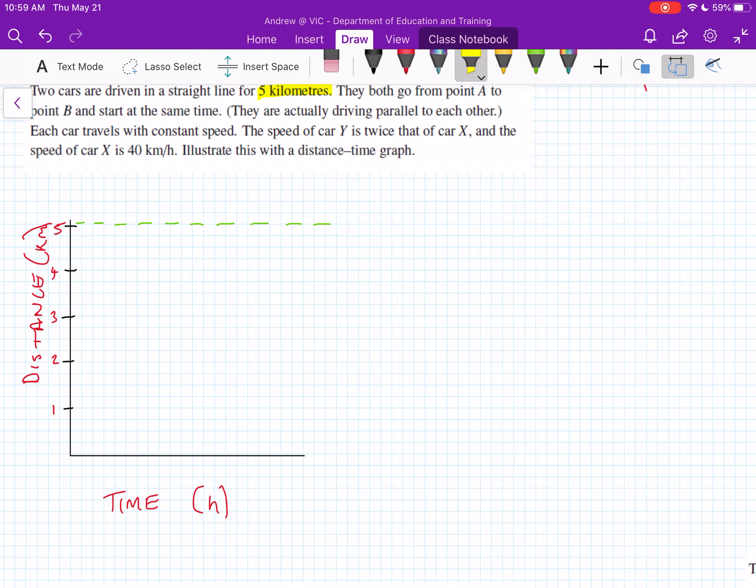Each car travels with constant speed. The speed of car Y is twice that of car X, and car X is going 40 km per hour. We need to illustrate this with a distance-time graph.